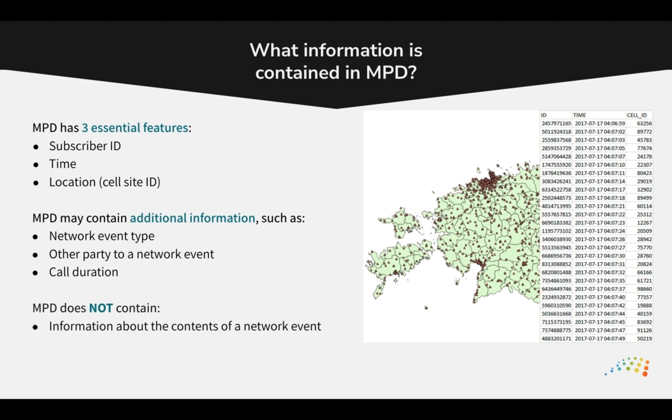Mobile phone data may also include other features depending on the type of data and what has been agreed with the MNO, such as the type of network event or the subscriber ID of the other party to a call or SMS message. However, mobile phone data does not include any information about the contents of a network event, only metadata generated as it passes through the network.